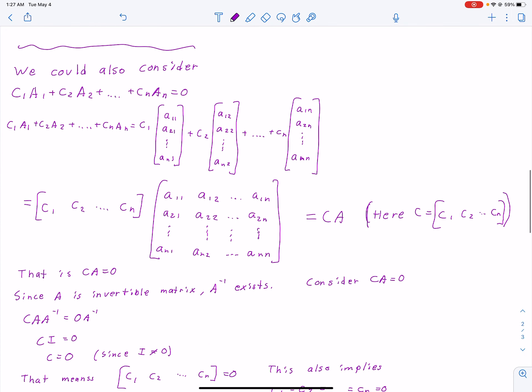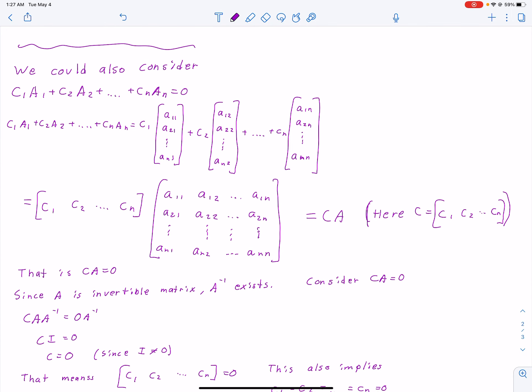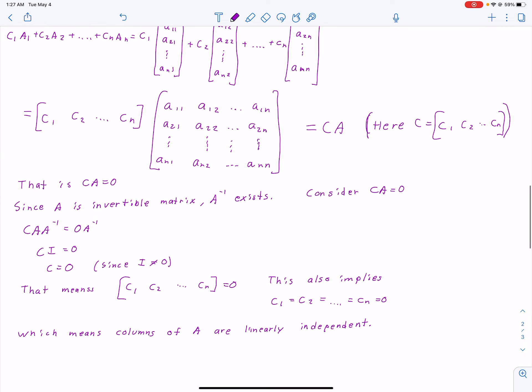We could also consider taking it down to the scalars with the vector form and putting it all together with the equation. Then we can reverse it into the summarized version and back to the matrix version, which still equals the normal thing.